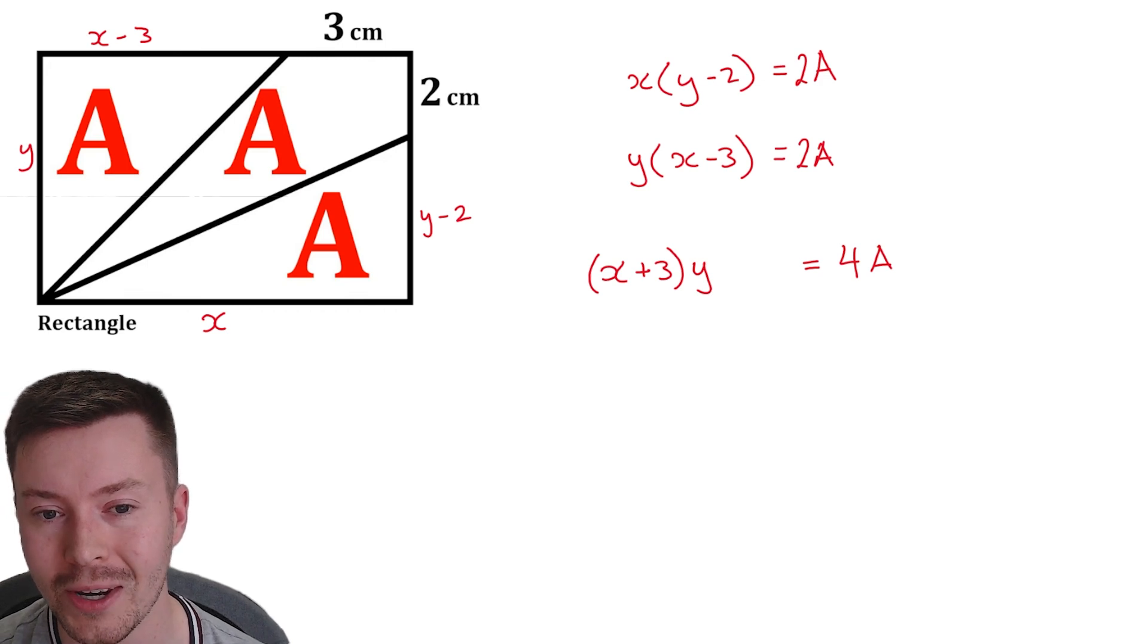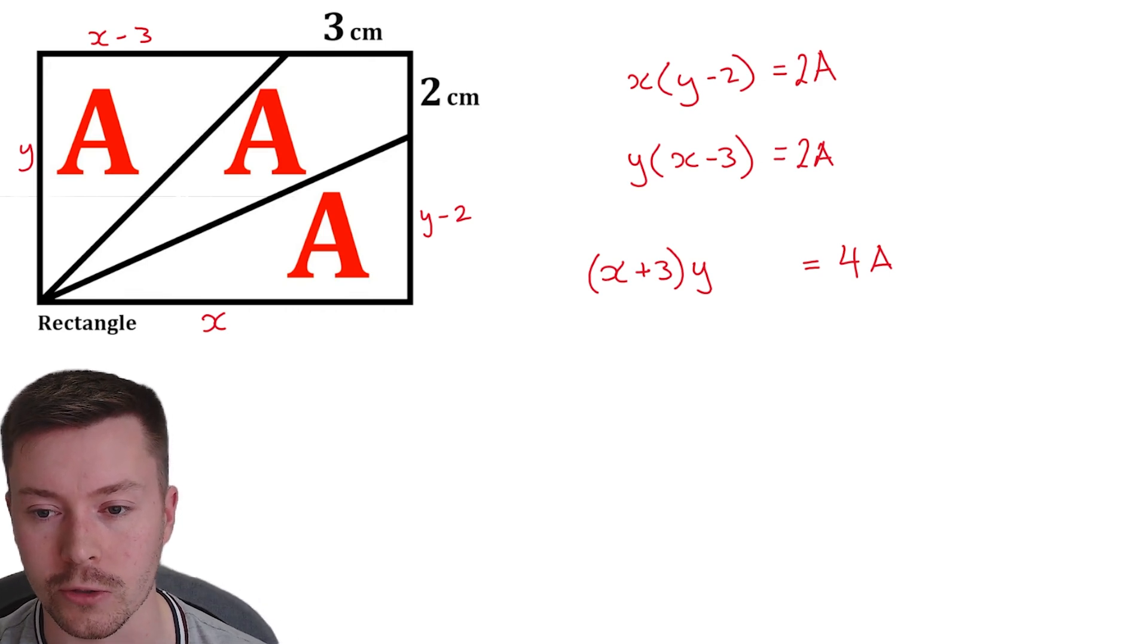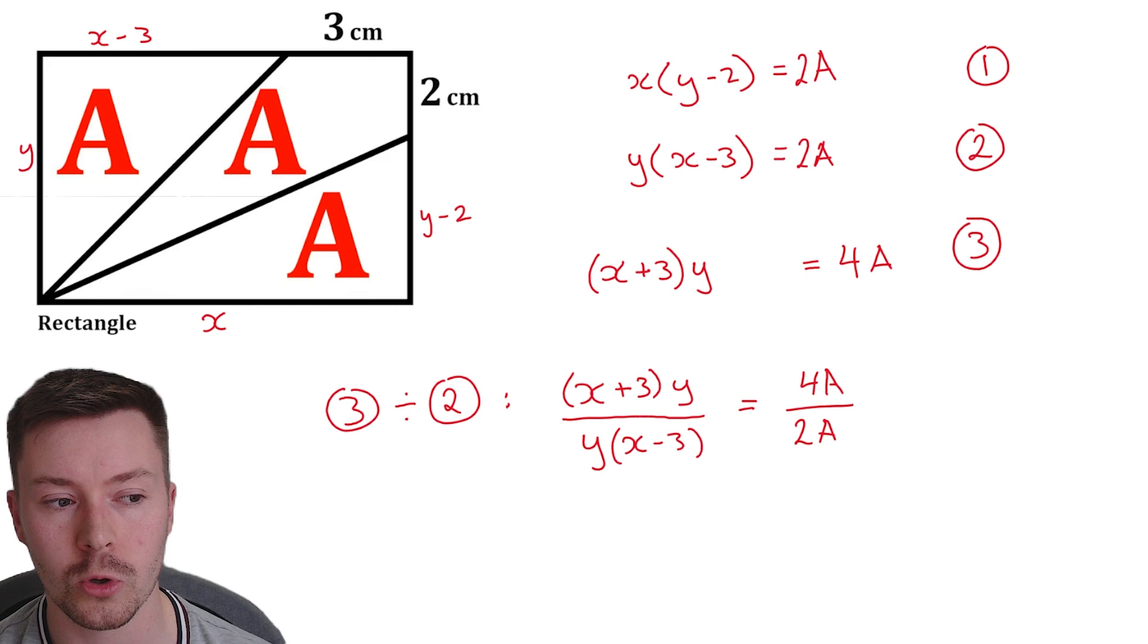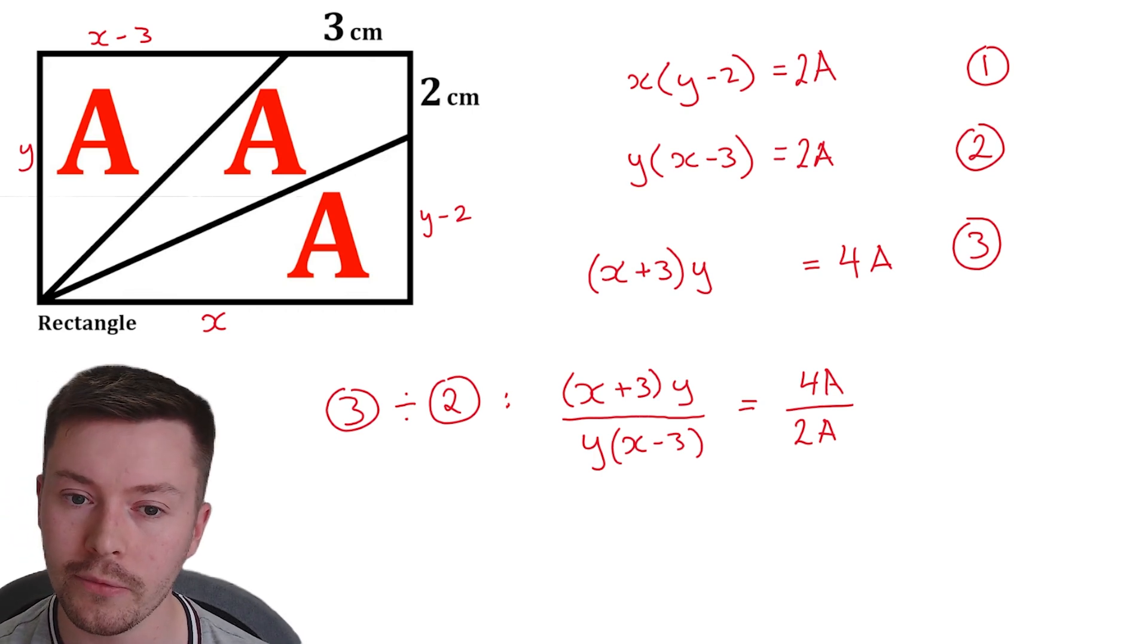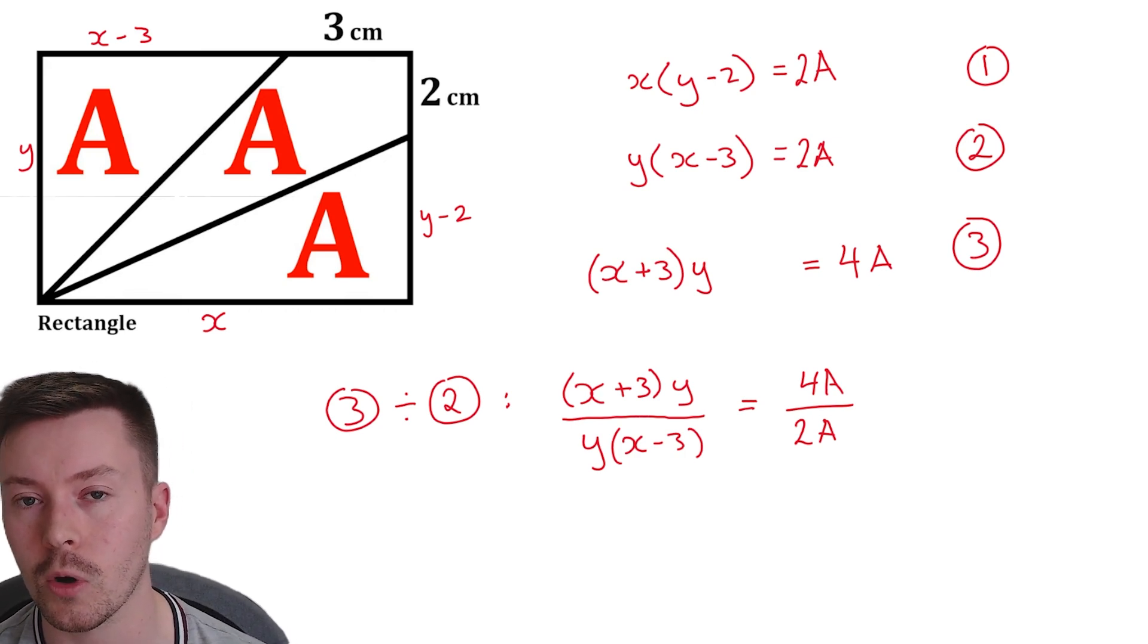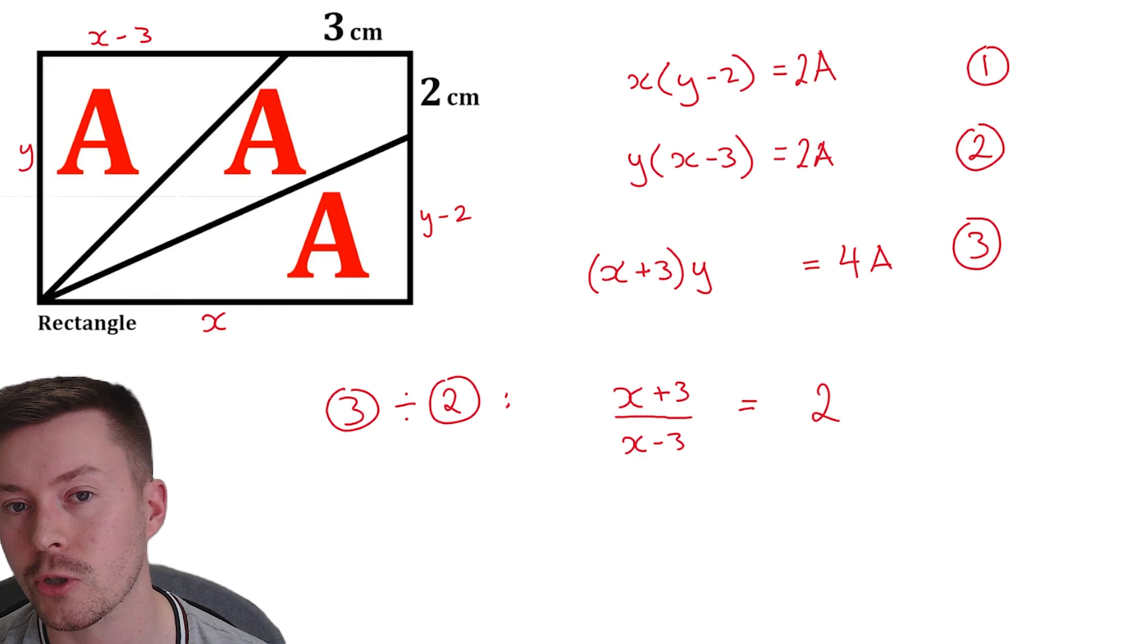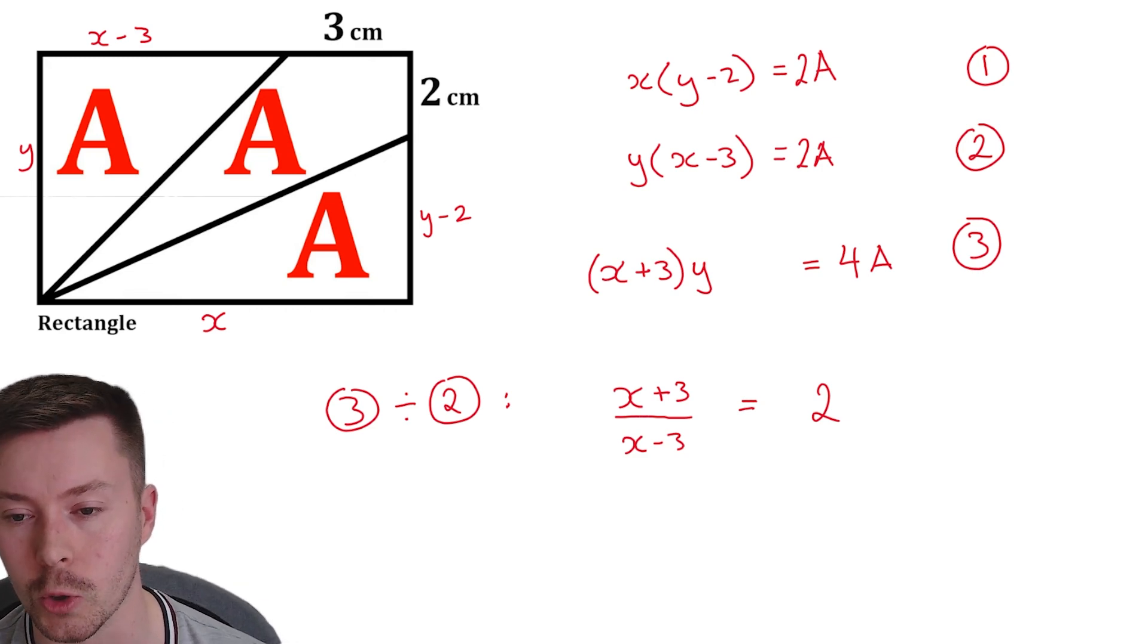Now what I want to do next is I notice that I've got X plus three and X minus three times by Y in different equations. So if I divide those two equations, the last one divided by the one just above, that is my triangle at the top left, then I get X plus three in brackets Y divided by Y in brackets X minus three is equal to 4A divided by 2A. Now I can simplify that to X plus three over X minus three by canceling the Y's, and 4A divided by 2A is two.